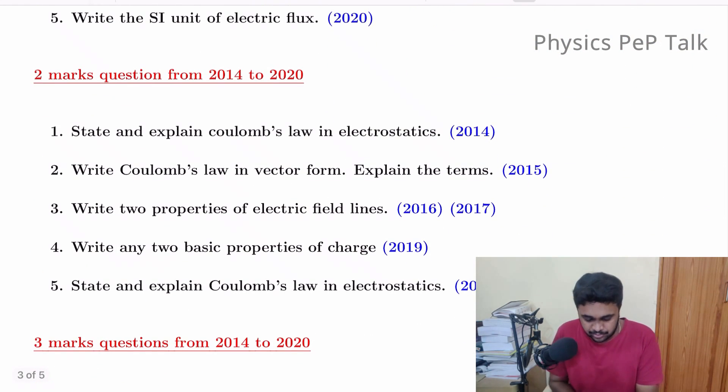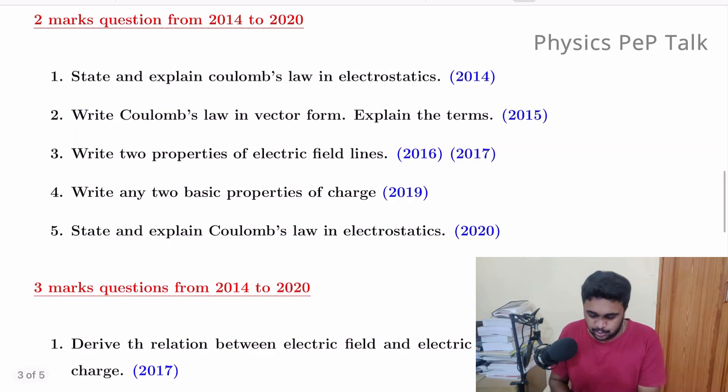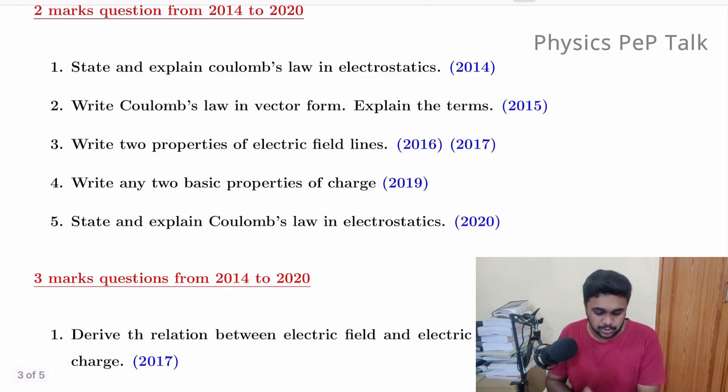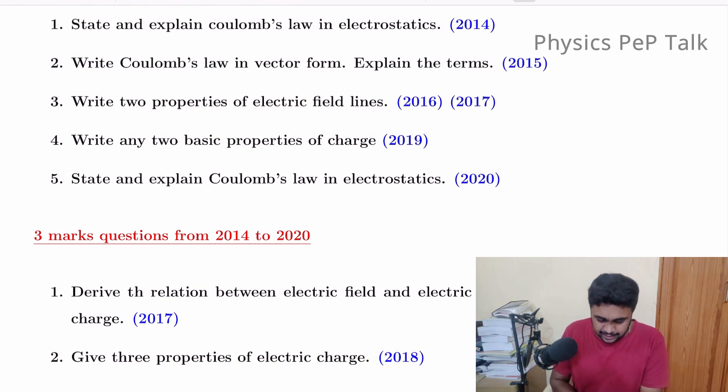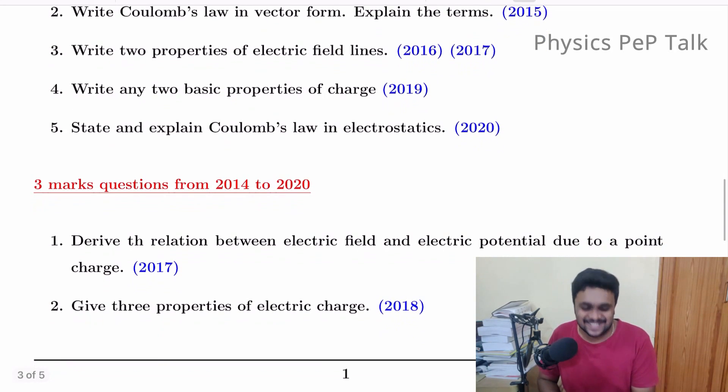Let's discuss two marks questions. State and explain Coulombs law in electrostatics. Write Coulombs law in vector form and explain the terms. State and explain Coulombs law and write it in its vector form is three marks. Don't confuse. Write two properties of electric field lines. This is asked for three marks. This is repeated again. Write any two basic properties of charge. This is in 2019. State and explain Coulombs law in electrostatics, that is in 2020. In 2021, we have no question paper, no solution.